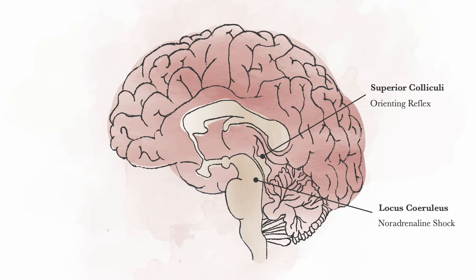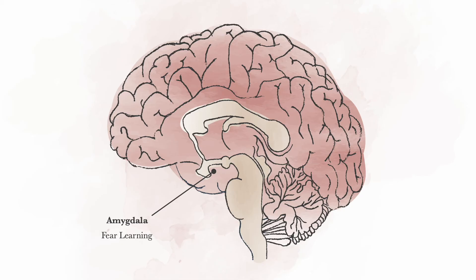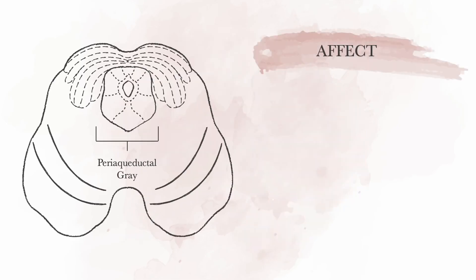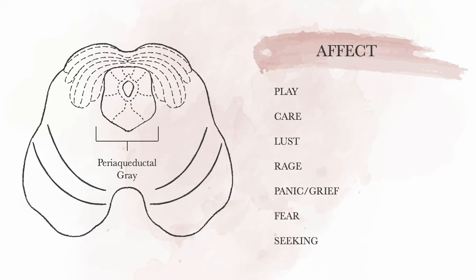This autonomic activation emerges from the periaqueductal grey, the generator of emotion and defence responses. Whilst emotions have often been associated with limbic areas of the brain, such as the amygdala for fear learning, it is this deeper brainstem structure that generates the affect. The late neurobiologist Jaak Panksepp produced a comprehensive review of the neural substrates for emotions in mammals. Play, care, lust, rage, panic, fear and grief were all found to converge upon this small structure of the periaqueductal grey. A variety of studies have shown that electrical stimulation of this area induces strong emotional responses in humans. You can see just how close it is to the superior colliculi — so here we have the transformation of initial orienting responses into emotional and defensive reactions.